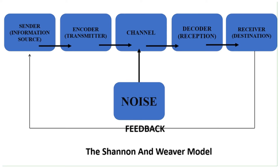The next step in the Shannon-Weaver model is the channel. The channel of communication is the infrastructure that gets information from the sender and transmitter through the decoder and receiver. We sometimes also call this the medium. For example, a person sending an email is using the World Wide Web and Internet as a medium. A person talking on a landline phone is using cables and electrical wires as their channel. If we are face-to-face, perhaps we don't have a channel except the sound waves from our voice that carry the sound from the sender's mouth to the receiver's ear.